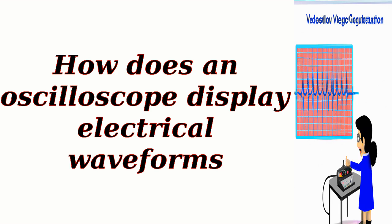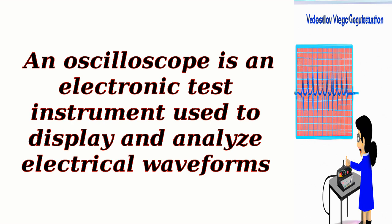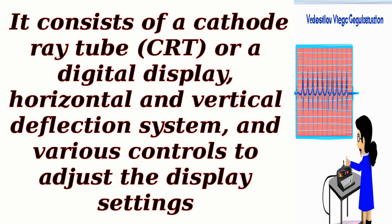How does an oscilloscope display electrical waveforms? An oscilloscope is an electronic test instrument used to display and analyze electrical waveforms. It consists of a cathode ray tube (CRT) or a digital display, horizontal and vertical deflection systems, and various controls to adjust the display settings.